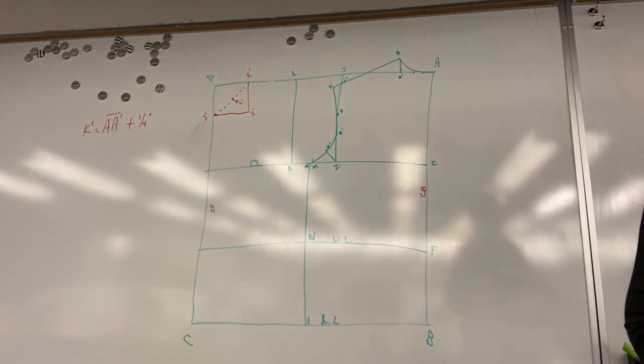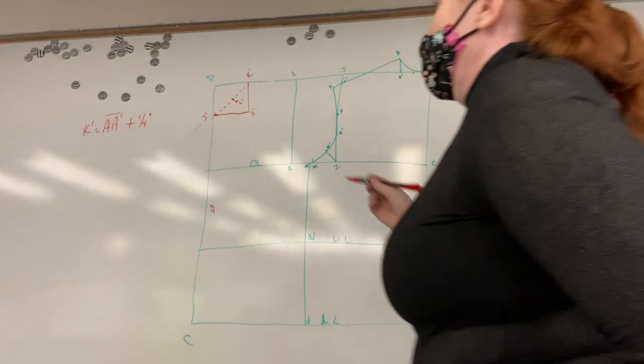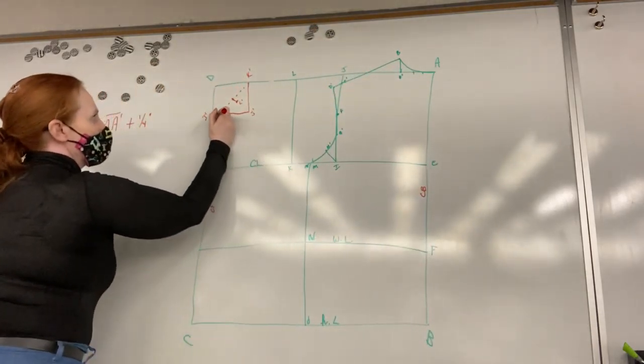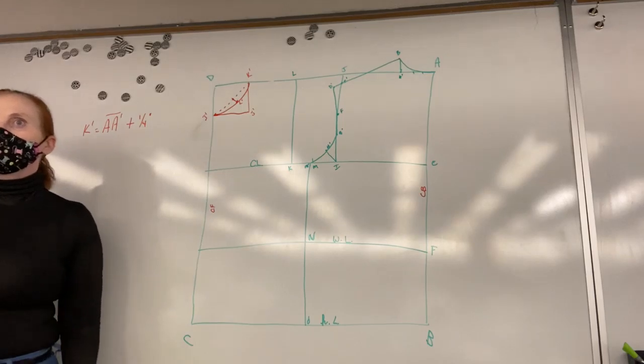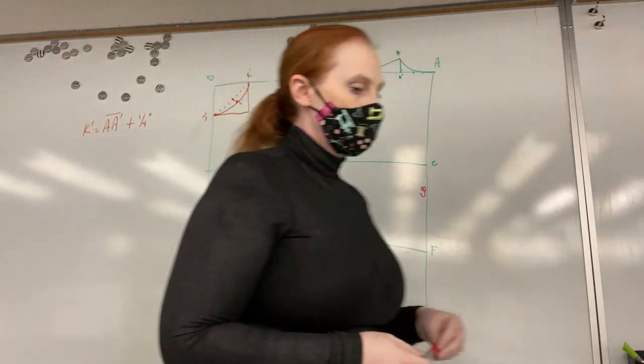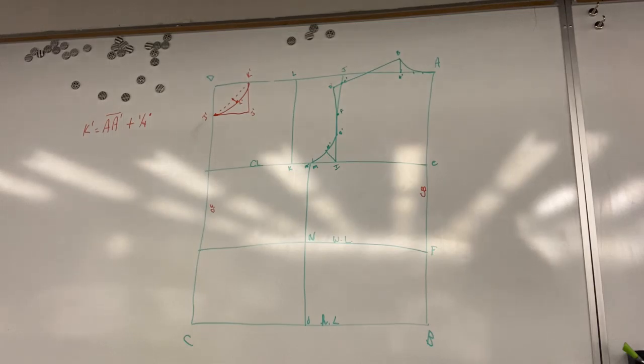Then you're going to use a curve and you're going to draw your front neck opening and it's going to start at K, it must hit L junior and it's going to end at I and you want it to be really smooth and that becomes your neck.